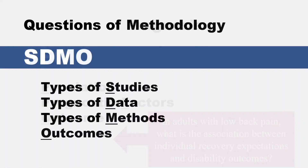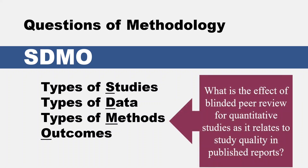Next we have, for questions of methodology — where you are investigating methods in research design — SDMO, which stands for types of studies, types of data, types of methods, and outcomes. Here's a sample topic: 'What is the effect of blinded peer review for quantitative studies as it relates to study quality in published reports?'